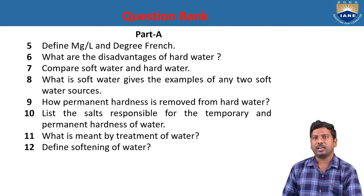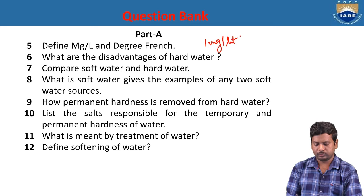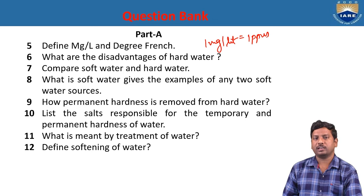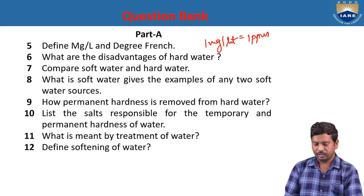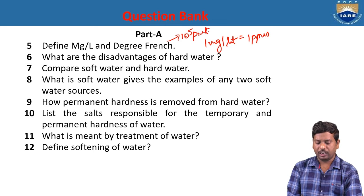Define milligram per liter and degree French. Milligram per liter is equal to 1 ppm — that means the amount of hardness in terms of calcium carbonate equivalence in milligrams present in 1 liter of solution. Degree French is the amount of hardness in terms of calcium carbonate equivalence present in 10⁵ parts, approximately 1 lakh parts.